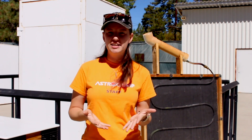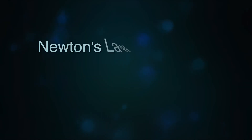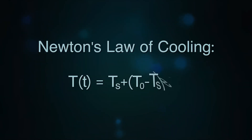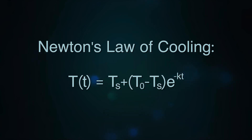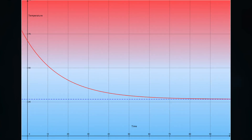This process can be explained by something called Newton's Law of Cooling. While the equation looks quite complicated, the process it explains is easy to understand. As heat transfers between an object and its surroundings, the difference in temperature exponentially decays.